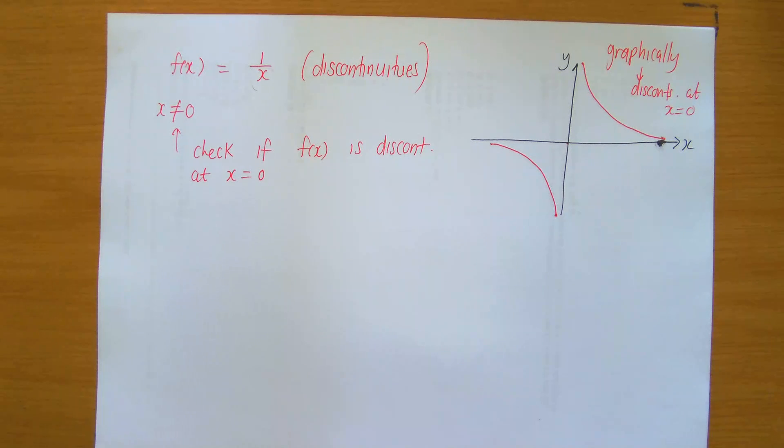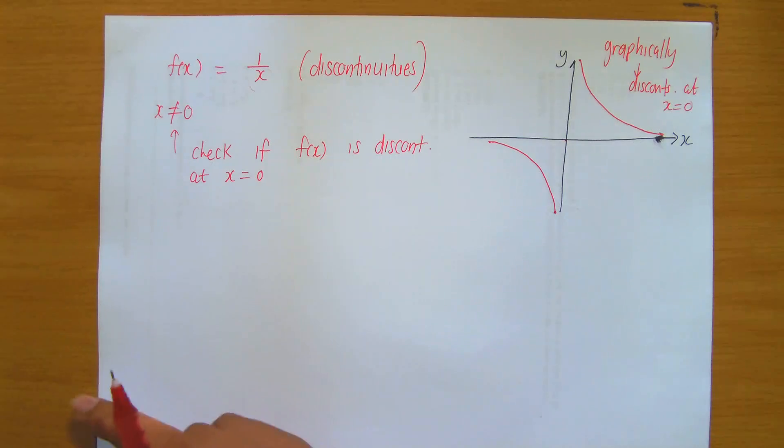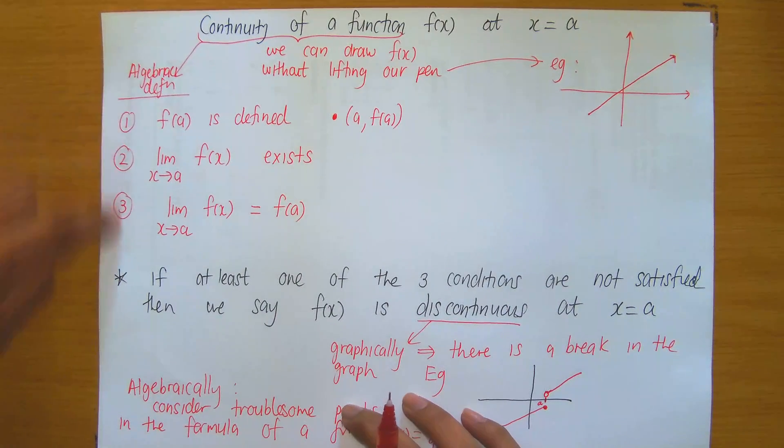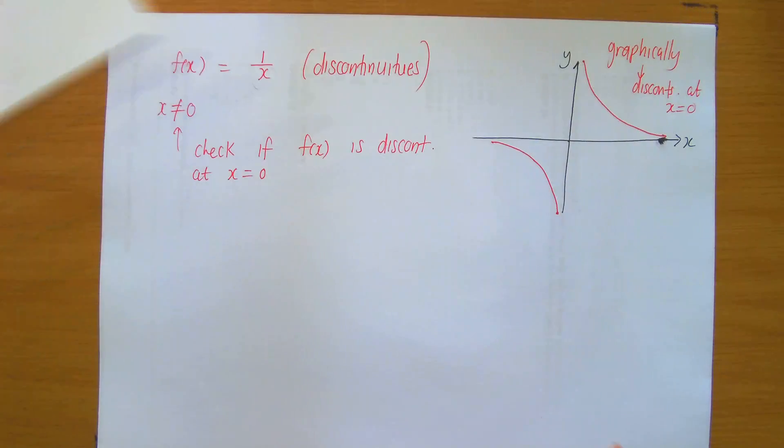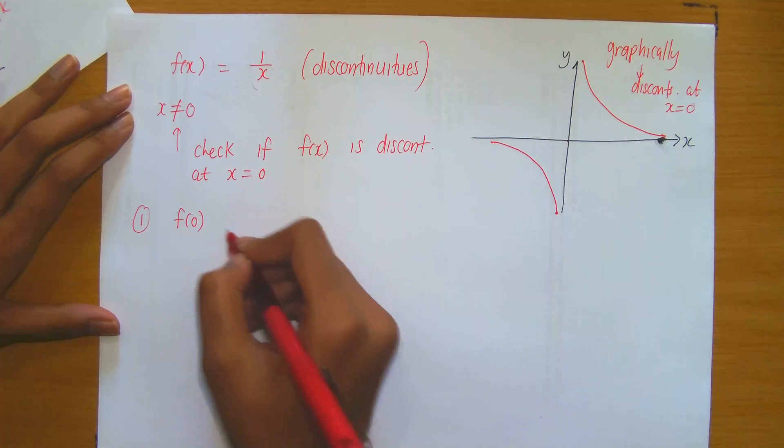But now, in mathematics, everything must be verified algebraically. We've already guessed and we've checked graphically that it's discontinuous, but now how do I verify algebraically that it's discontinuous? You need to show that one of these three conditions are not satisfied. That's what we have to do.